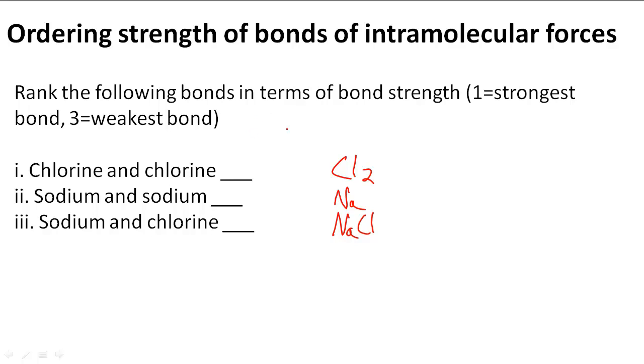So we have three different types of bonds. And let's figure out what type of bonds they are so then we can easily determine their strength.